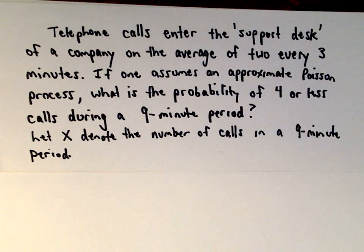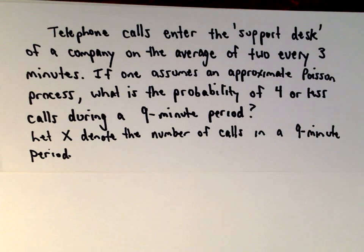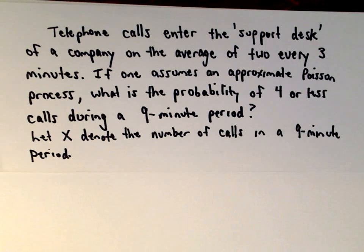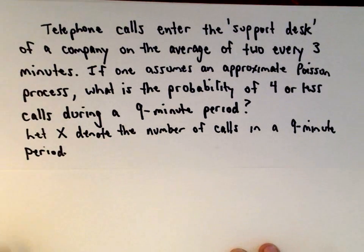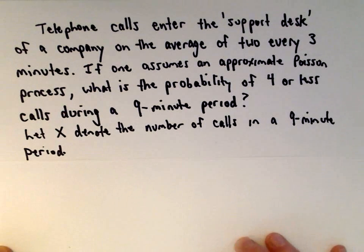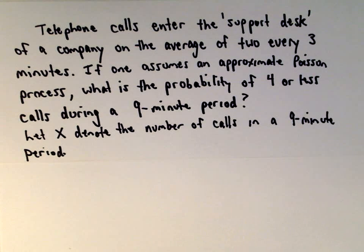One word of warning: the results can initially be very counterintuitive. Think about what you believe the probability of getting four or fewer calls during this nine-minute period would be. Then let's compute it and see if it matches your intuition. This is a good illustration of why we have to use mathematics — because our intuition can be a little fuzzy on these.